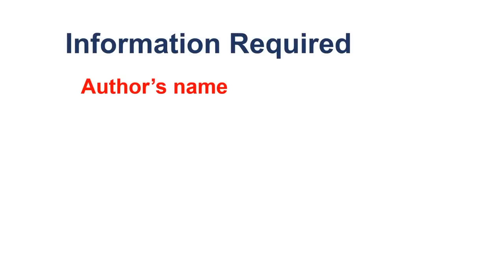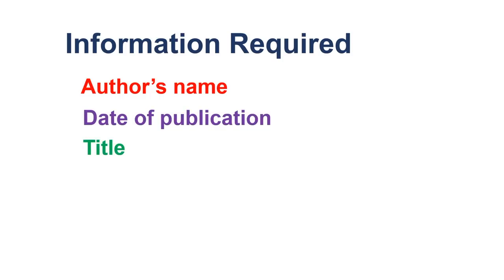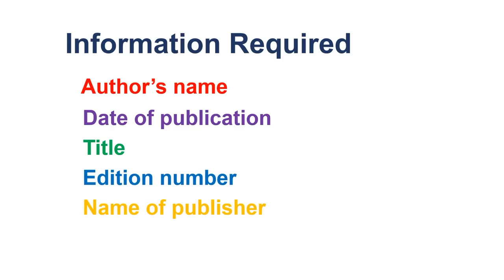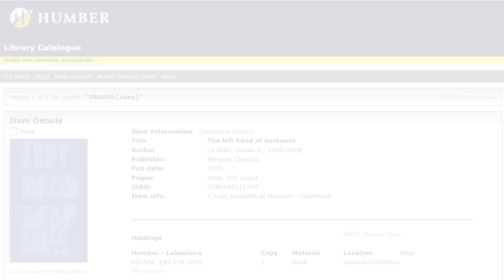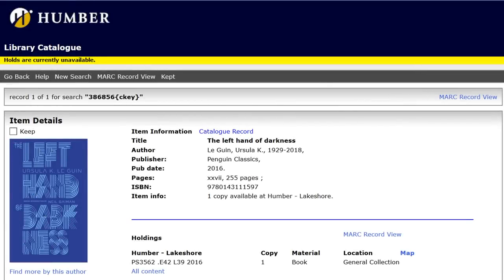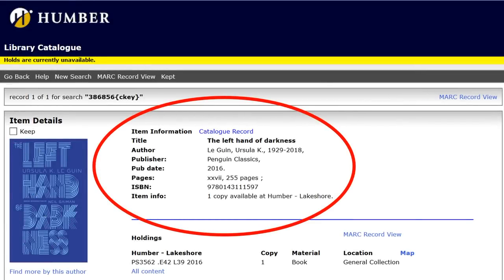To cite a book in APA, you will need the author's name, the year that the book was published, the title of the book, the edition number if it's not the first edition, the name of the publisher, and, if given, the digital object identifier known by its acronym DOI. This information is commonly found within the first few pages of a book or on an online catalogue record.